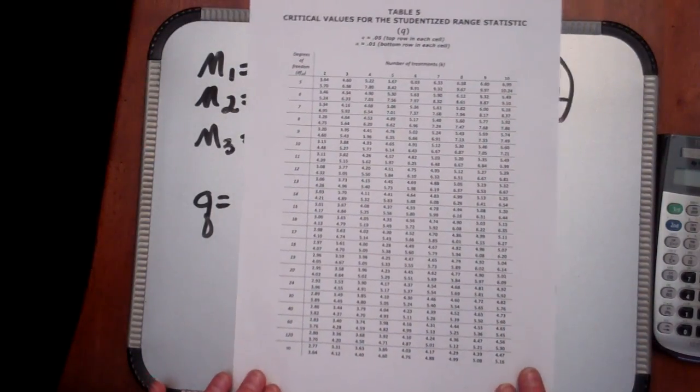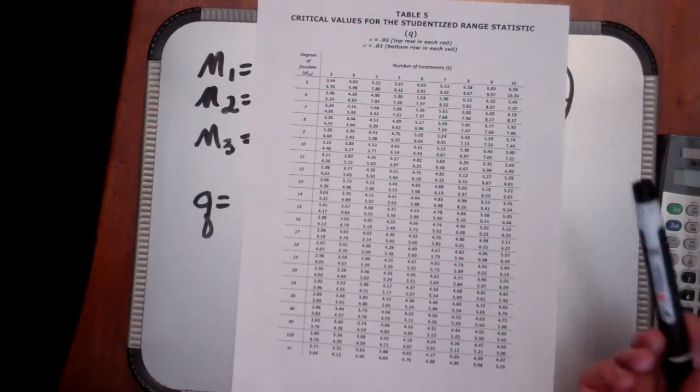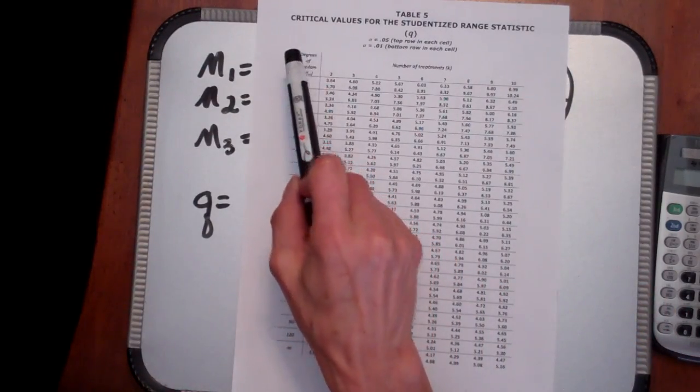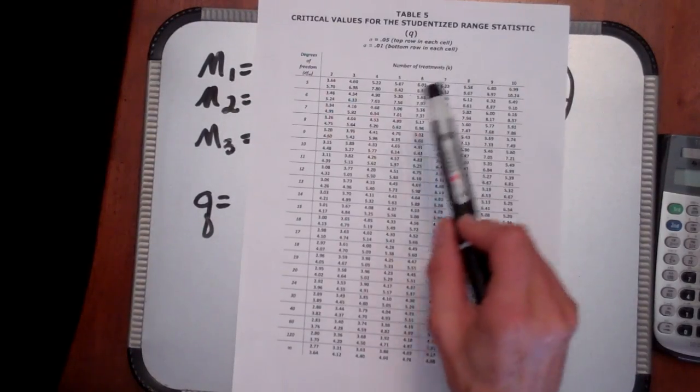Now where do you get your Q-value from? From a table. So for this statistic we have to use another table, and this is available in your text. Please print it out now if you have not already done so, so you can look at this with me.